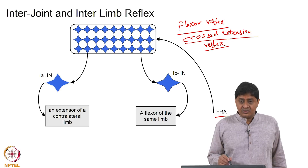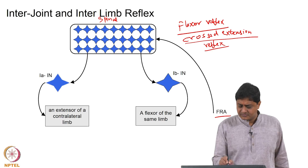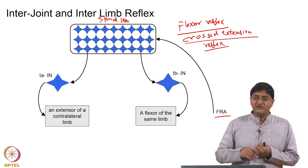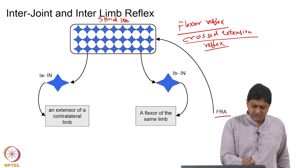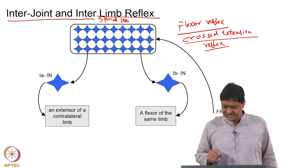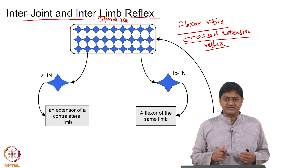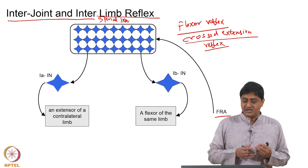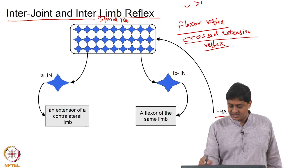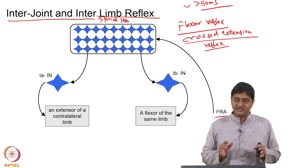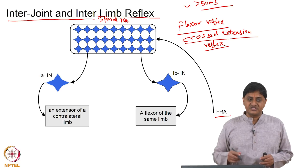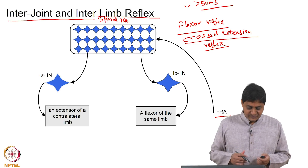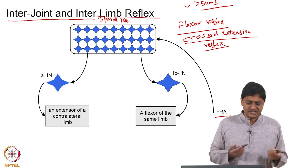These also involve several spinal interneurons. The flexor withdrawal is called the flexor reflex, and the concomitant simultaneous extension of the other limb is called the crossed extension reflex. These two happen approximately simultaneously so the person does not fall down. These involve reflexes that control other joints and the contralateral limb — they are not monosynaptic but polysynaptic reflexes with delays greater than 50 milliseconds.